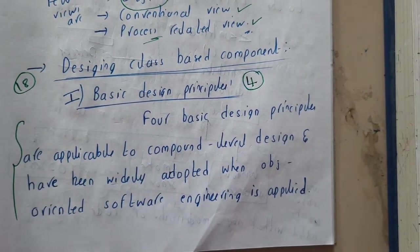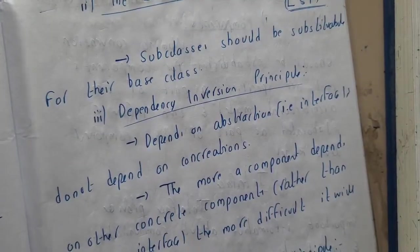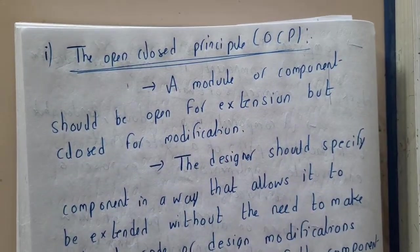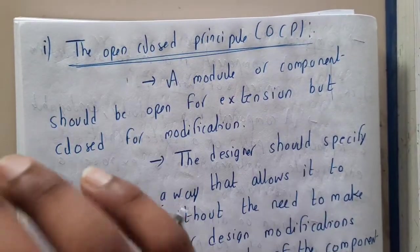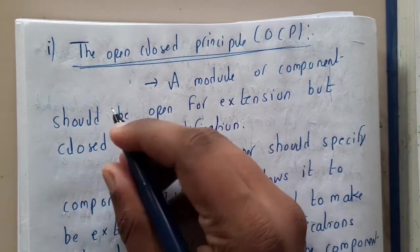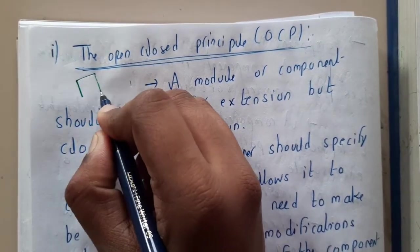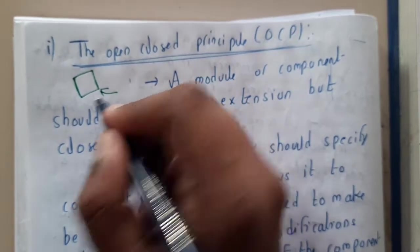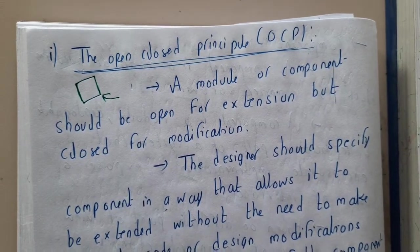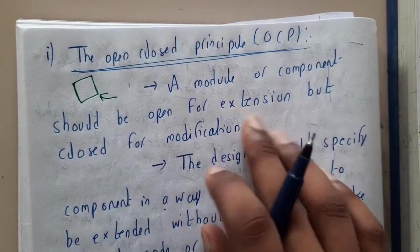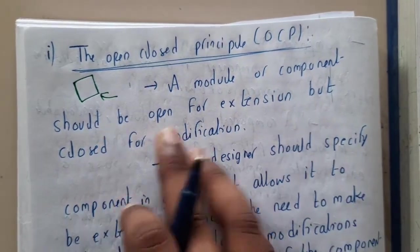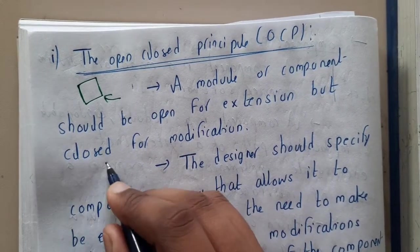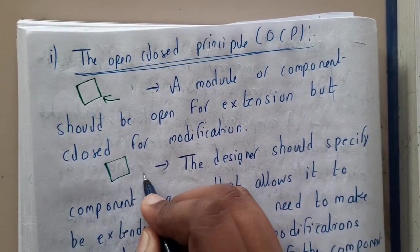These four steps are mandatory. The first principle is the Open Closed Principle. It states that if there is a module, a module or a component should be open for extension but closed for modification.